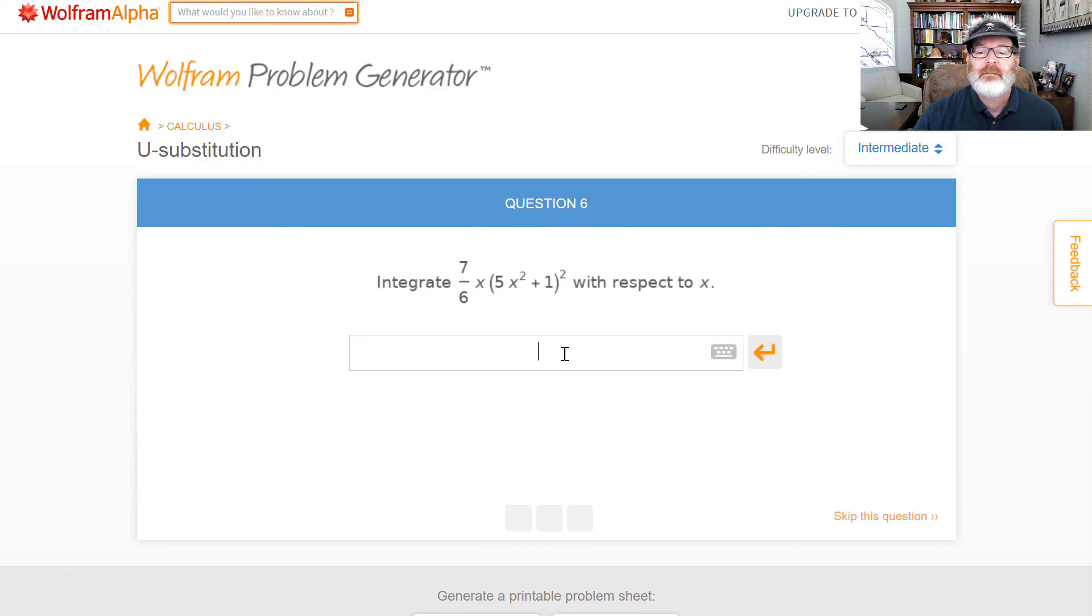One more to go. All right, nice simple one to an integer power, so it'll be cubed over three, but I'll just do the cube part. So five x squared plus one cubed. If I take the derivative, we'll get ten x times three, thirty x. But I only want, so I have to divide by thirty, multiply by seven six, so that's seven over one eighty.